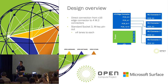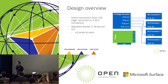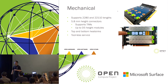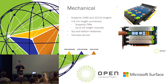For the design overview, what we want to emphasize is that it's very simple. You have a x16 edge connector connected to four M.2 connectors, each of which has four lanes of PCIe Gen3, and each module is a standard socket 3 M-key pinout. You can see here on the bottom right we have a 22-110 module installed, and from the top right there are holes where we support moving the standoffs to 22-80 lengths.